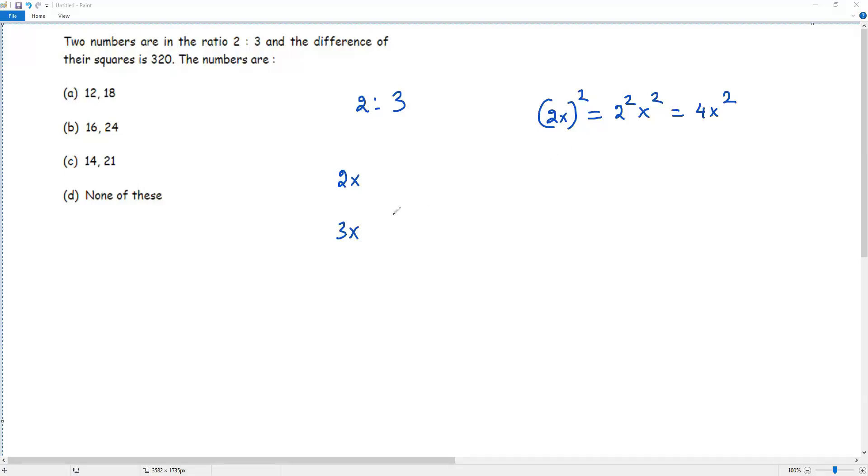Now I'm going to square the second number, that is 3x whole square, it becomes 3 square times x square, which becomes 9x square.